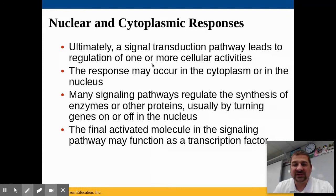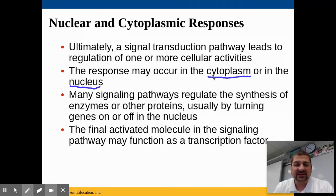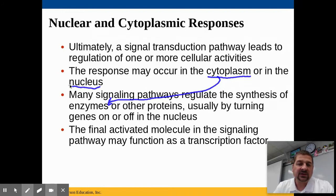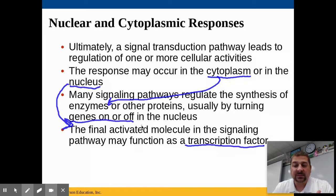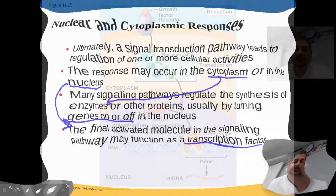A single transduction pathway leads to one or more cellular activities. This may happen in the cytoplasm — where it would usually turn on or off enzymes or other proteins — or it may travel into the nucleus, where a transcription factor will go into the DNA, expose certain genes, and turn genes on or off to make some new product that causes something different to happen in the cell.